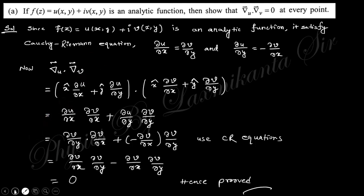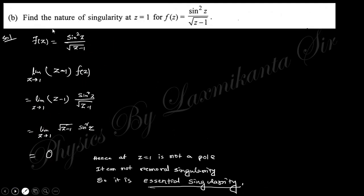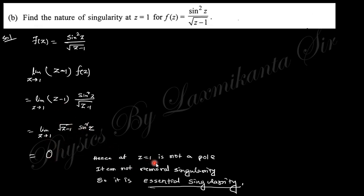The next question asks: find the nature of the singularity at z = 1 for f(z) = sin²z / √(z-1). Taking the limit as z tends to 1, since the denominator tends to zero, we evaluate the limit of f(z) and find it equals zero. Since the limit is zero (not infinity), z = 1 is not a pole. It is not a removable singularity either, so it is an essential singularity.